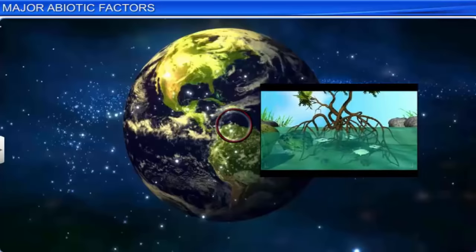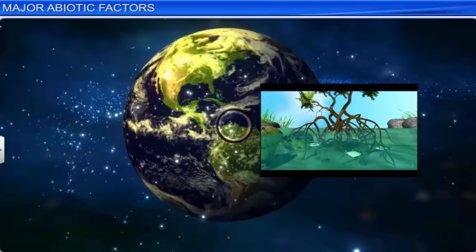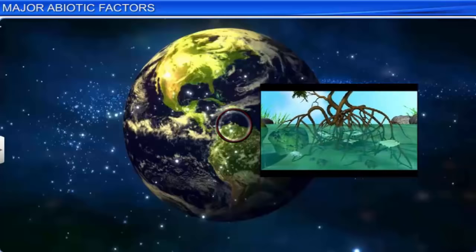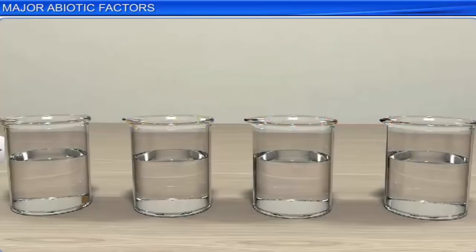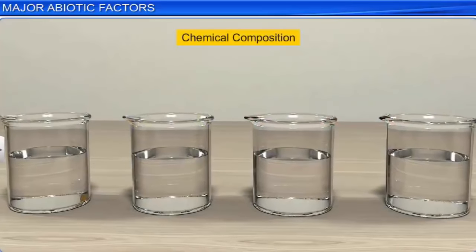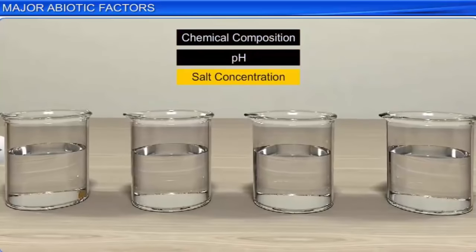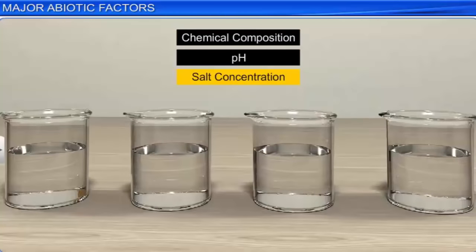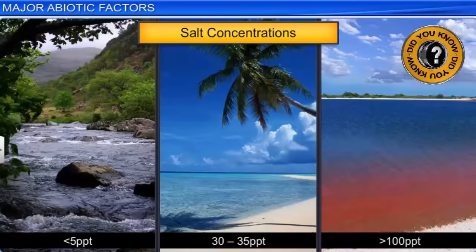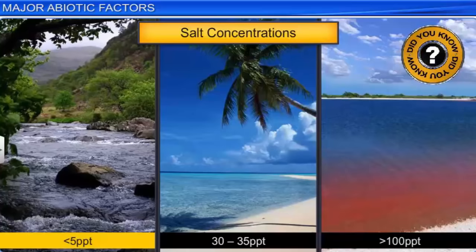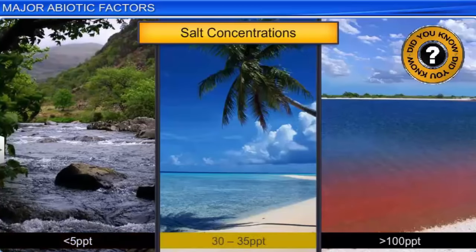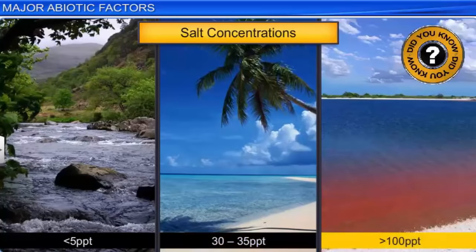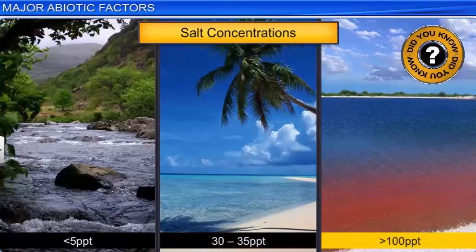Apart from the availability of water, the quality of water is also important for organisms, particularly those living in aquatic habitats. Quality of water means the chemical composition, pH, as well as the salt concentration of water. The concentration of salt is measured as salinity in parts per thousand, or PPT, which has a significant influence on the life of aquatic organisms. Did you know that the concentration of salt in inland water is less than 5 PPT? In seawater, it is 30 to 35 PPT, while in hypersaline lagoons, it is more than 100 PPT.